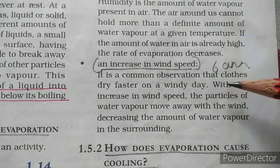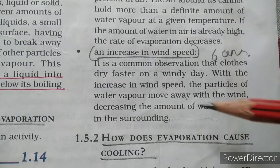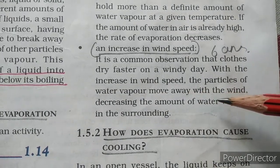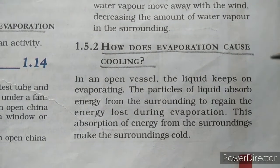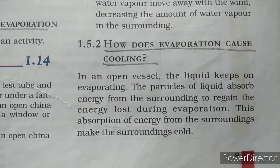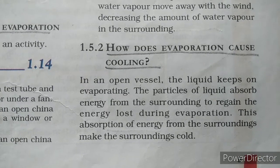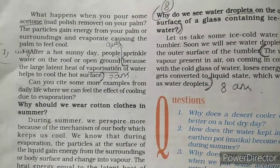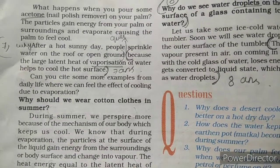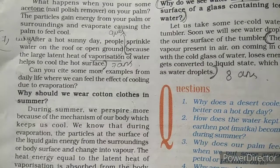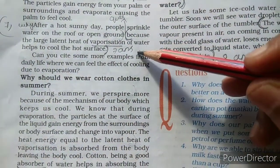An increase in wind speed also increases evaporation — clothes dry faster on a windy day, as particles of water vapor move away with the wind. In an open vessel, the liquid keeps evaporating; particles absorb energy from the surroundings to compensate for energy lost during evaporation, making the surroundings cold. Pouring acetone (nail polish remover) on your palm causes it to feel cold. After a hot sunny day, people sprinkle water on roofs because the large latent heat of vaporization of water helps cool the hot surface.